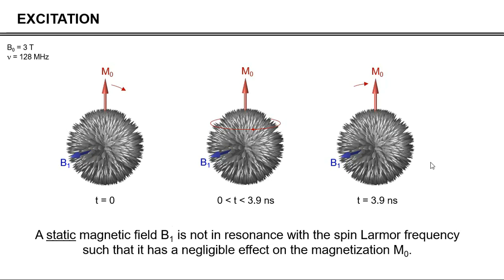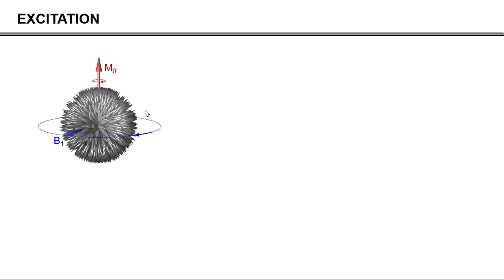In order to get a coherent rotation, the B1 magnetic field needs to have a constant phase relationship with the magnetization M0. And that can be achieved by rotating the B1 field at the same Larmor frequency as the nuclear spins. When the B1 field is rotating at the same frequency, it has a constant angle relative to M0, and therefore it has a constant torque towards rotation towards the XY plane.